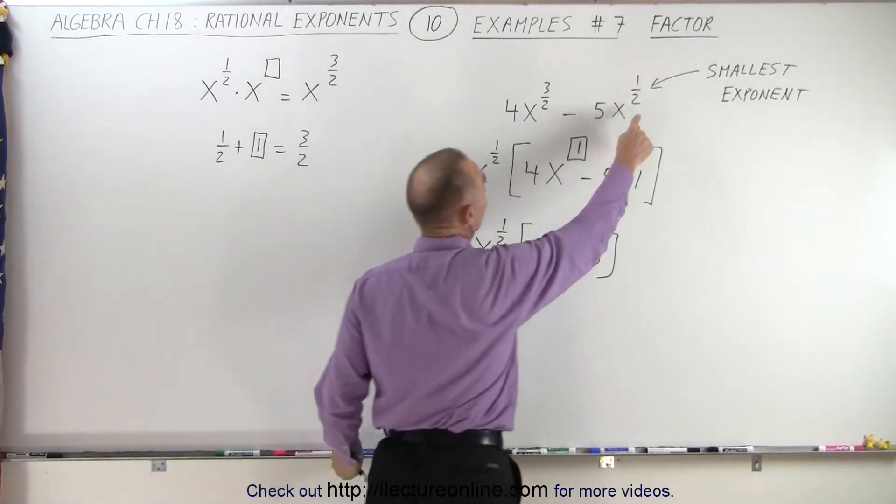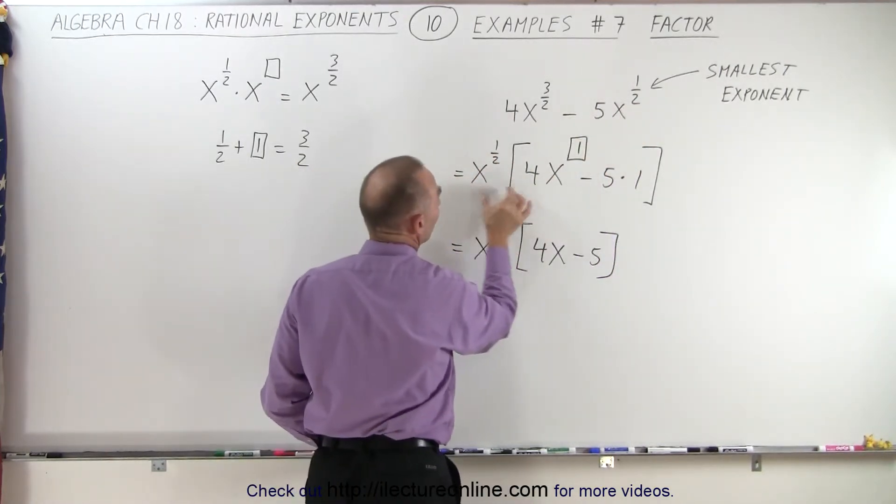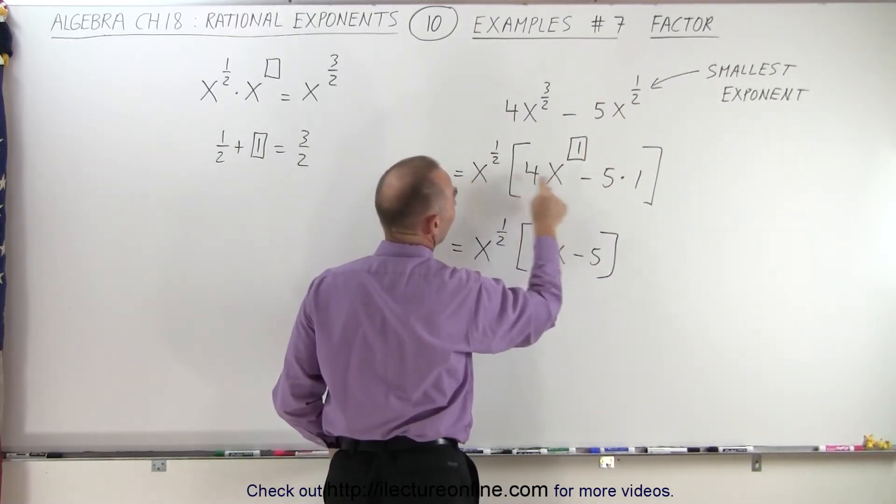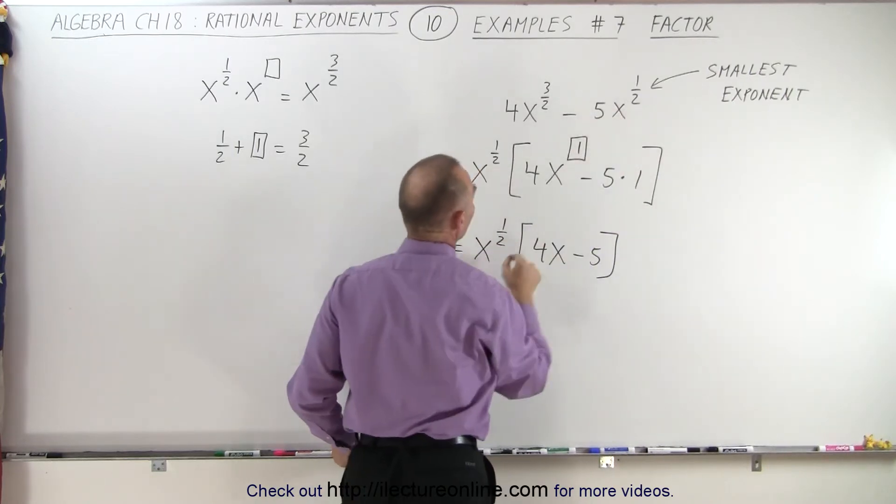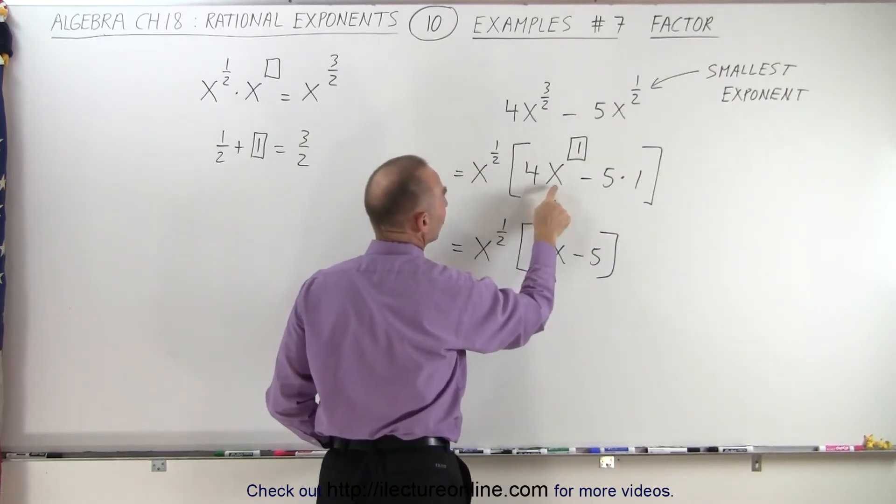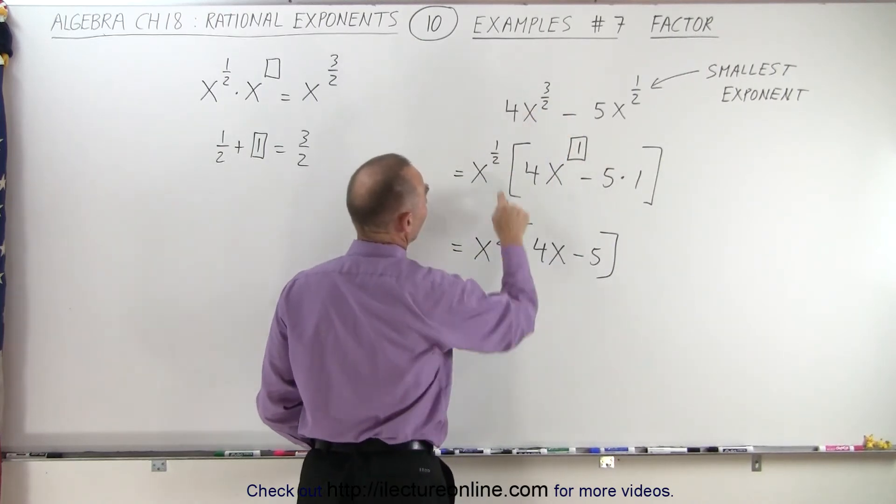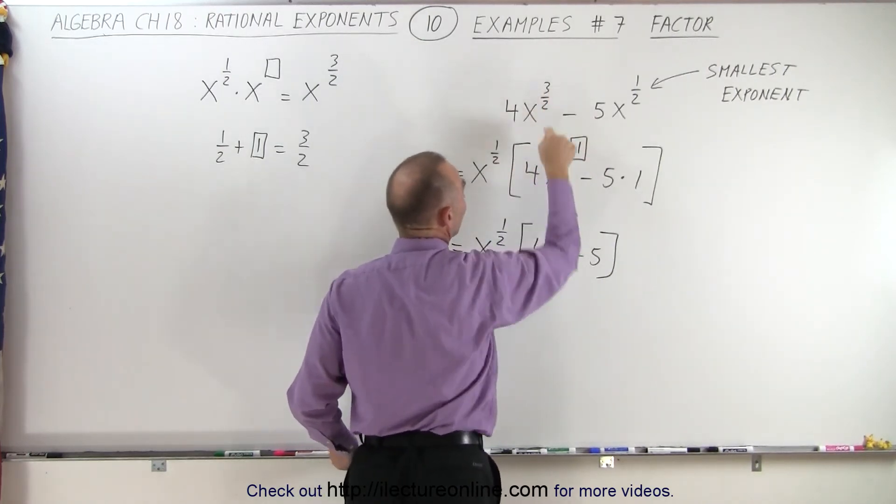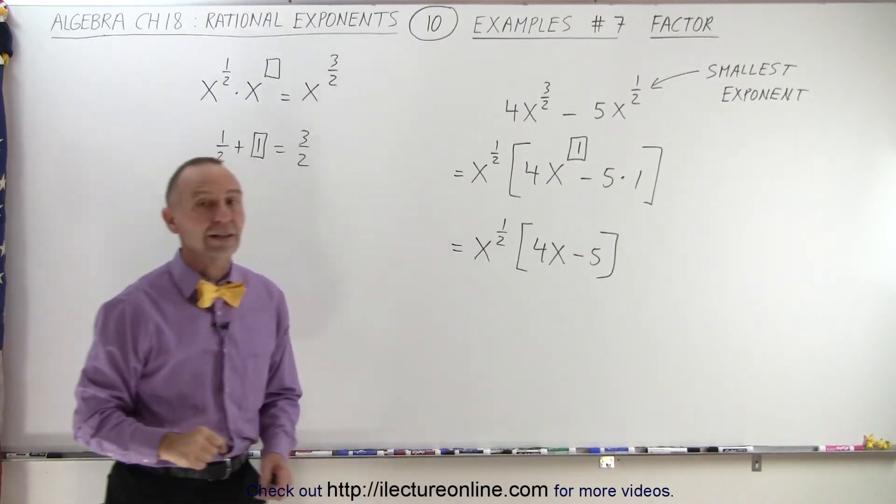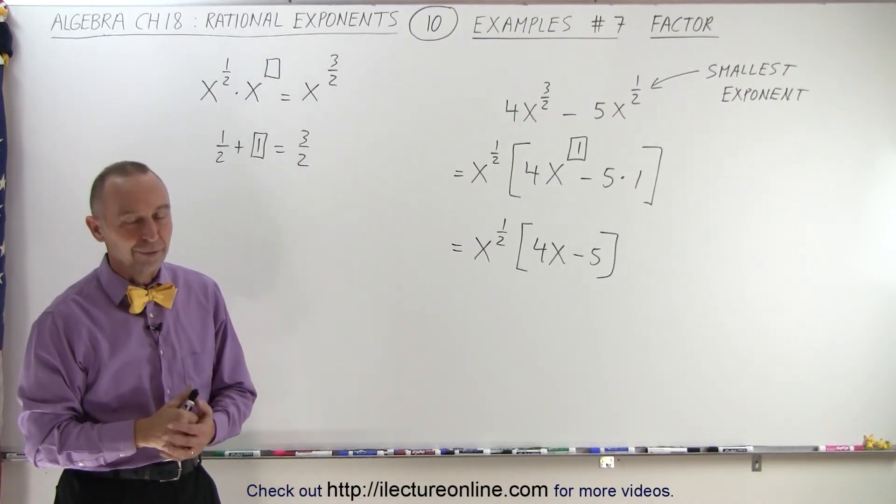So again, you look for the smallest exponent, you factor that out. Here you can clearly see that x to the 1 half times 1 gives us back x to the 1 half, but x to the 1 half times what power gives us back x to the 3 halves? And a half plus 1 is indeed 3 halves. So that's the final answer, and that is how it's done.